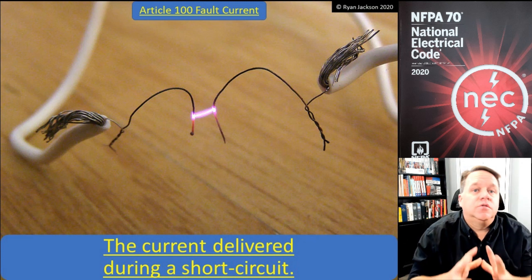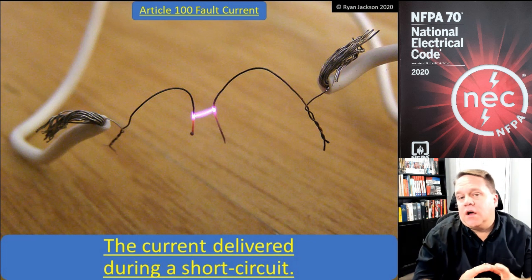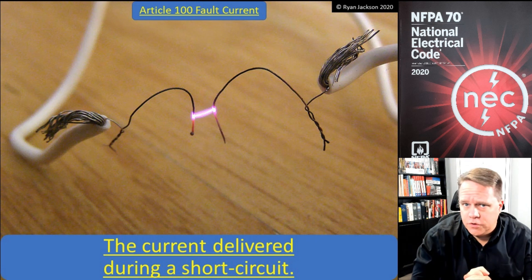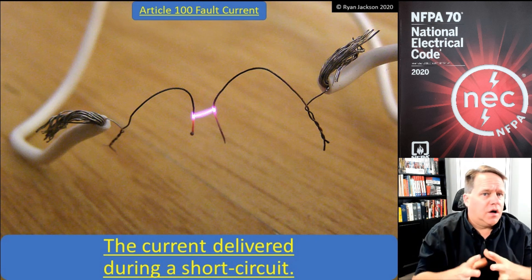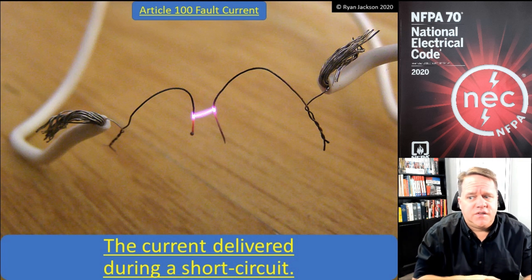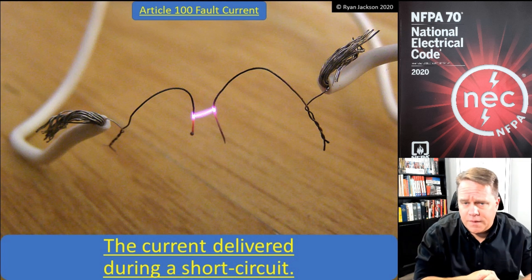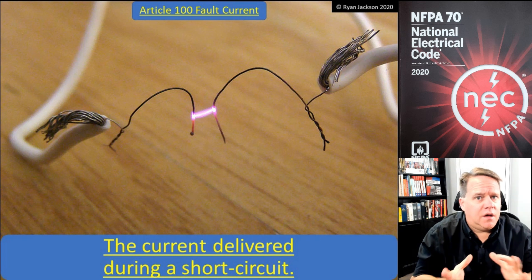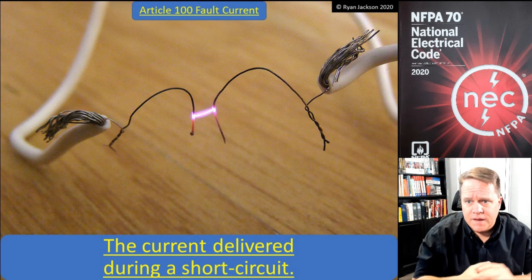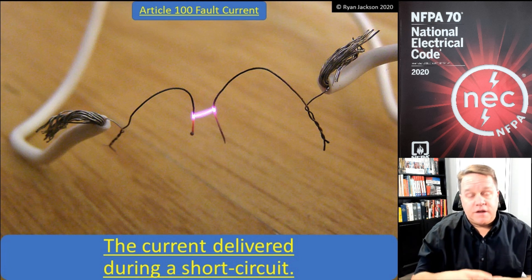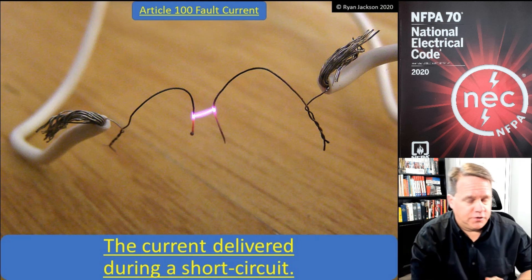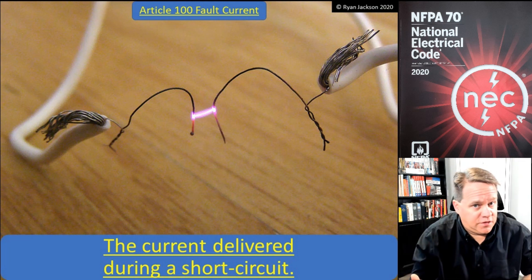The 2020 NEC added two definitions that were really important and quite frankly long overdue. We've talked about this concept in sections 110.9 and 110.10 since the 1940s. So it's about time we had these things defined. The first one is fault current, and we defined fault current really so that we could define available fault current.